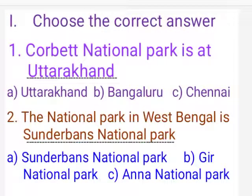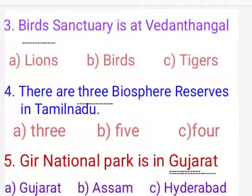Now for revision — choose the correct answer. First, Corbett National Park is in Uttarakhand. Second, the national park in West Bengal is Sundarbans National Park. Third, the bird sanctuary is at Vedanthangal. Fourth, there are three biosphere reserves in Tamil Nadu. Fifth, Gir National Park is in Gujarat.